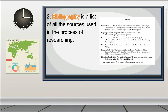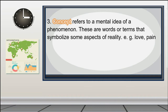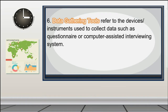2. Bibliography — a list of all the sources used in the process of researching. 3. Concept — refers to a mental idea of a phenomenon; these are words or terms that symbolize some aspects of reality. Examples: love, pain. 4. Conclusion — provides a summary of the research. 5. Data — an information that can be words or numbers.